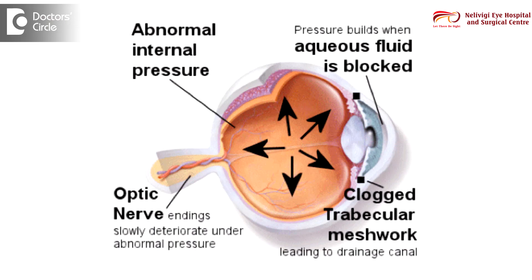In certain circumstances, this trabecular meshwork, which is at the corner of the eye, gets blocked by a natural tissue of the eye called the iris. When the iris blocks the trabecular meshwork, we call this angle closure glaucoma. In other circumstances, the tissue keeps the meshwork open, but there can be an inherent molecular-level block in the trabecular meshwork.